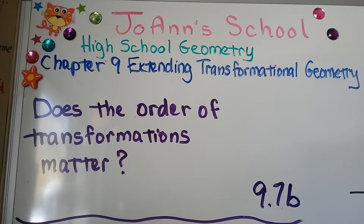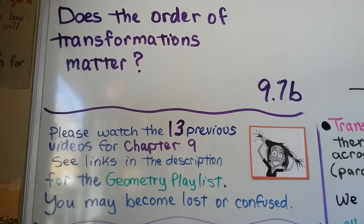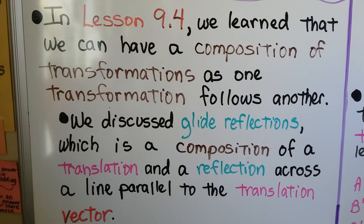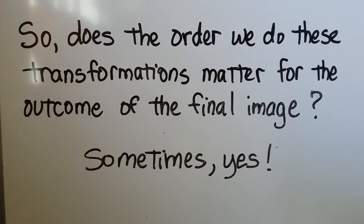Does the order of transformations matter? We're at lesson 9.7b, and there are 13 previous videos for chapter 9 linked in the geometry playlist in the description if you need them. In lesson 9.4 we learned that we can have a composition of transformations, where one transformation follows another. We discussed glide reflections, which is a composition of a translation and a reflection across the line parallel to the translation vector. So does the order we do these transformations matter for the outcome of the final image?